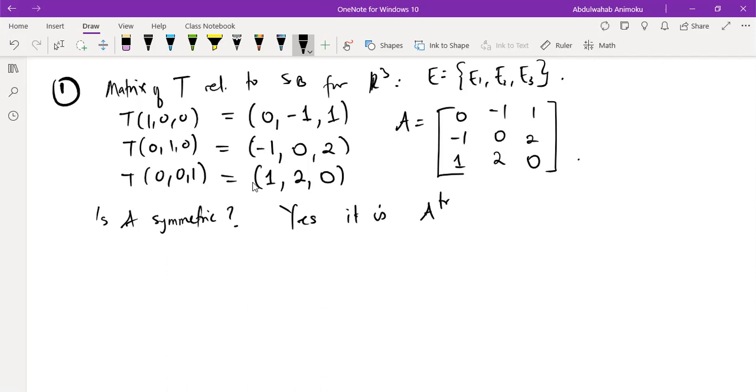Because when we find the transpose of this matrix, it's still the same thing. So we are writing the columns as the rows of this particular matrix. So columns of A would become the rows of the transpose.